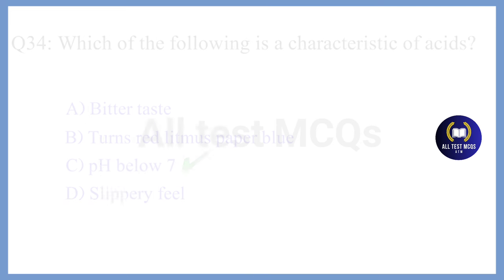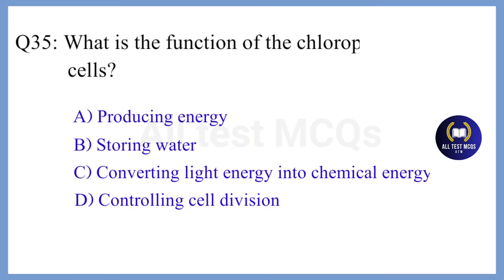Question 35. What is the function of the chloroplast in plant cells? The correct answer is Option C. Converting light energy into chemical energy.